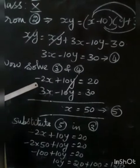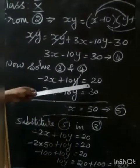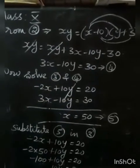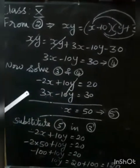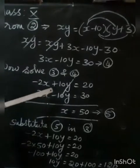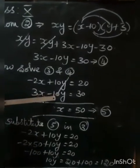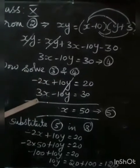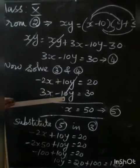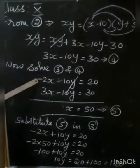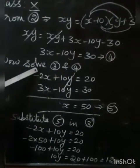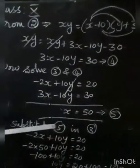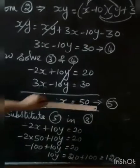Third equation is minus 2X plus 10Y equals 20. Fourth equation is 3X minus 10Y equals 30. Using the elimination method: plus 10Y and minus 10Y cancel directly. Adding: minus 2X plus 3X gives X equals 1X. On the right side, 20 plus 30 equals 50. Therefore X equals 50. This is the fifth result.